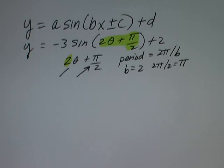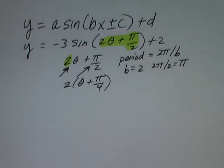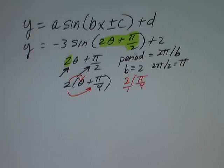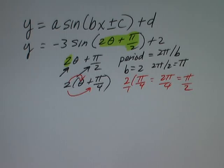What we have to do is factor out the 2 from 2θ + π/2. So I'm going to write this as 2(θ + π/4). If you distribute, you'll see that's the same as 2θ + π/2: 2 times θ is 2θ, and 2 times π/4 equals π/2. So we first have to factor out that coefficient in front of theta to see what actually happens horizontally. We see we have π/4 in parentheses, meaning we're going to shift this function π/4 units to the left — that's where it's going to start.